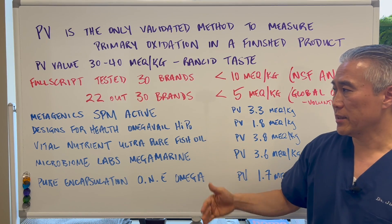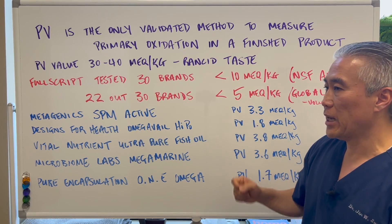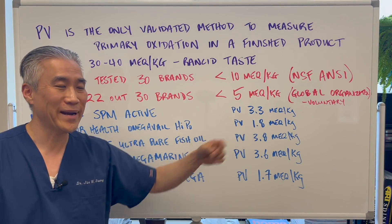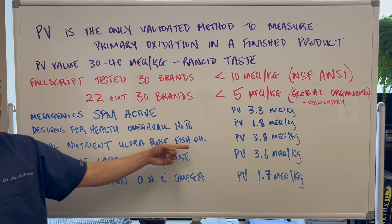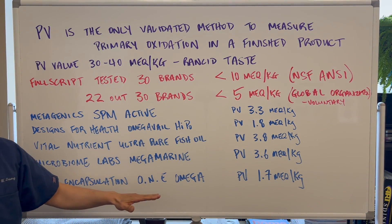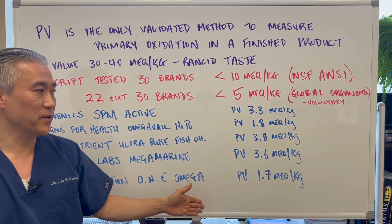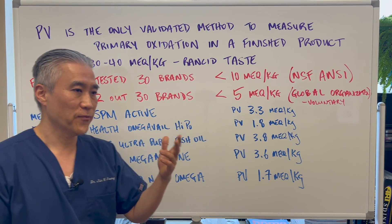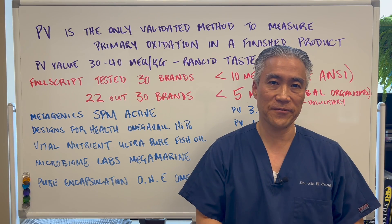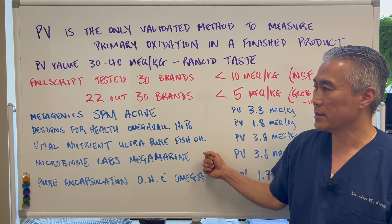Here are five companies — there are others that have less than five, but I'll list five here. Metagenics SPM Active has a PV value of 3.3. Designs for Health Omega Avail High Potency has 1.8. Vital Nutrients Ultra Pure Fish Oil has 3.8. Microbiome Labs Mega Marine has 3.6. And Pure Encapsulations 1 Omega has 1.7. Anything under five is an excellent product. So if you want a quality fish oil and you're concerned about oxidation or rancidity, you definitely want to go with a reputable company that third-party tests their products to make sure it's not rancid.